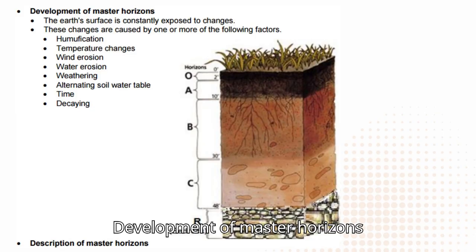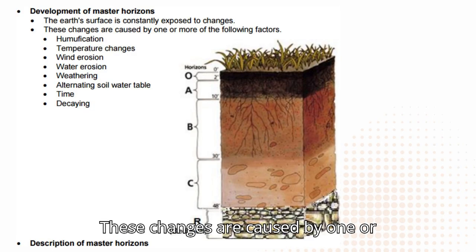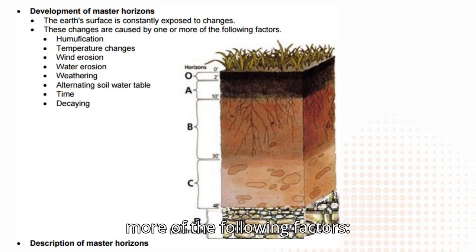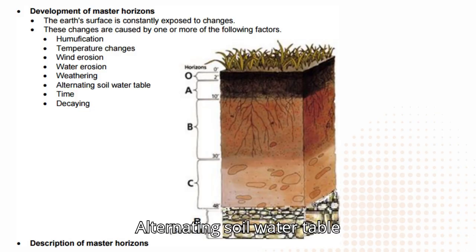Development of Master Horizons. The Earth's surface is constantly exposed to changes. These changes are caused by one or more of the following factors: humification, temperature changes, wind erosion, water erosion, weathering, alternating soil water table, time, and decaying.